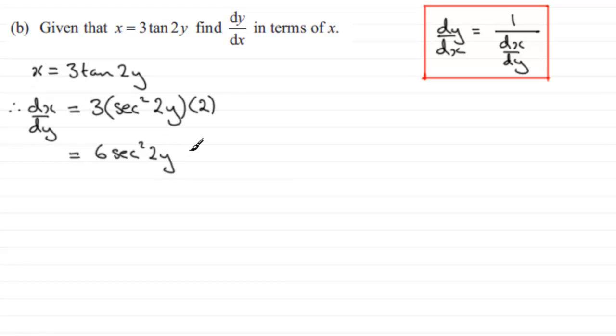Now I've got to express dy/dx in terms of x. At the moment I've got dx/dy in terms of y, so I need to get this across to x. How am I going to do that? Well, we should be familiar with a basic identity.